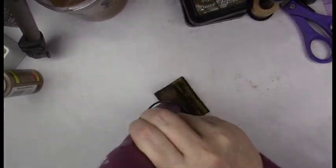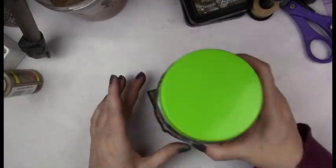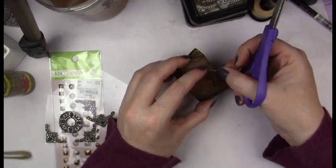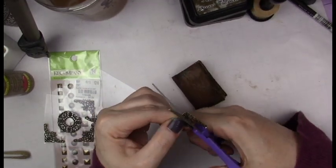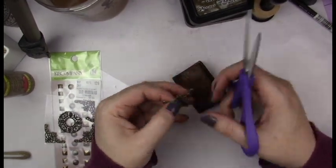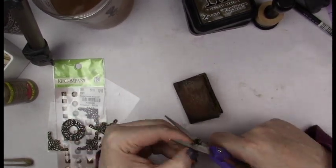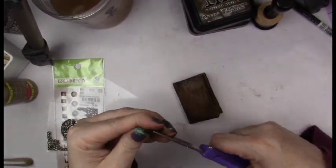Then I used some embellishments for the outside. I think they were like some Martha Stewart metal stickers and cut them out to make it look like a little clasp and then some corner pieces. Later on you don't see it here, but I did paint the word spells on it because it just felt like it was missing something.